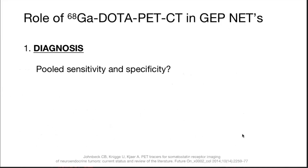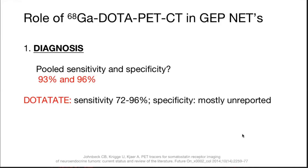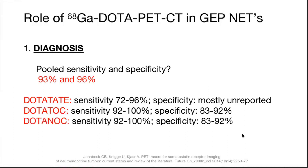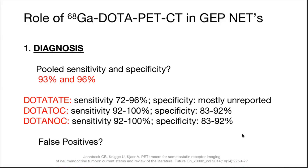The role of Gallium-68 DOTA PET-CT in gastroenteropancreatic NETs — first, for diagnosis: the pooled sensitivity and specificity overall is 93% and 96% respectively. DOTATATE has a sensitivity of 72–96%, DOTATOC has 92–100% sensitivity and 80–90% specificity, and DOTANOC has similar sensitivity and specificity. Second, Gallium-DOTA can be used for staging.